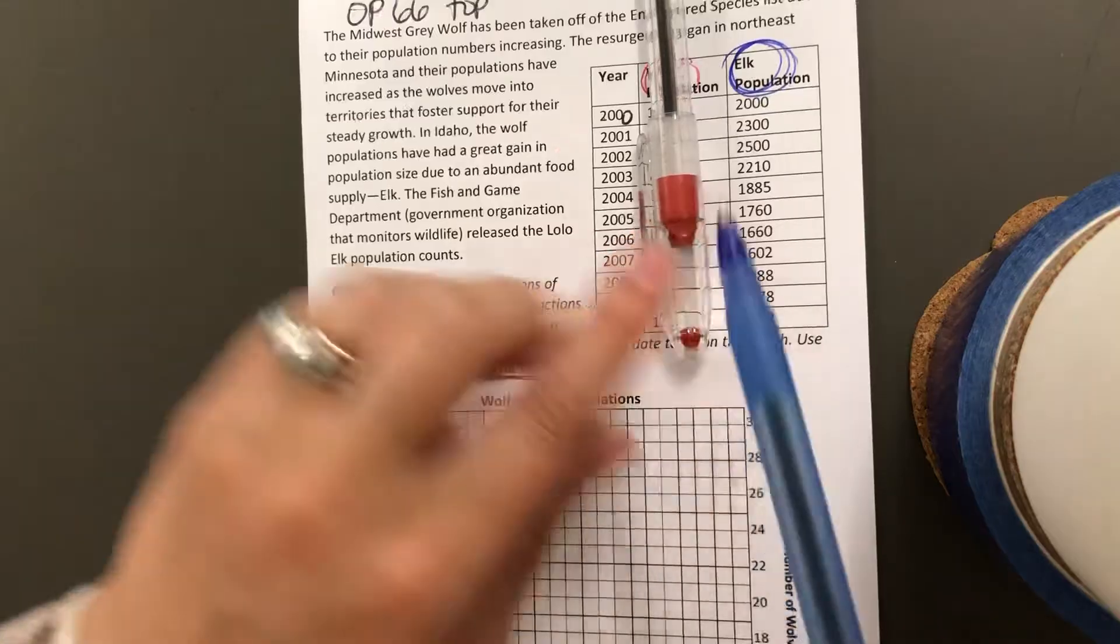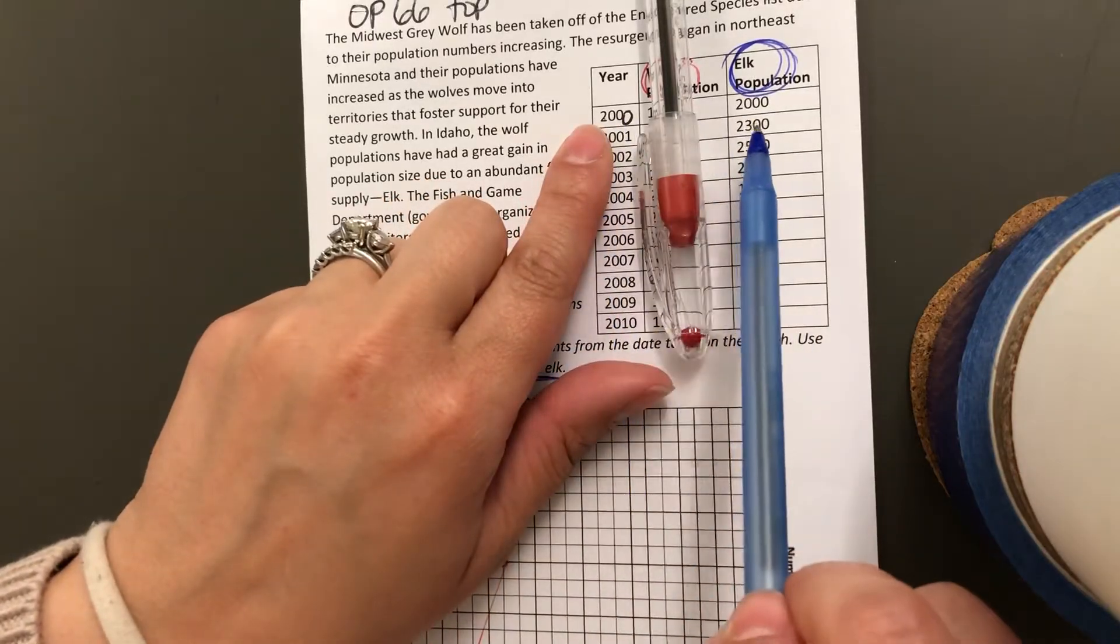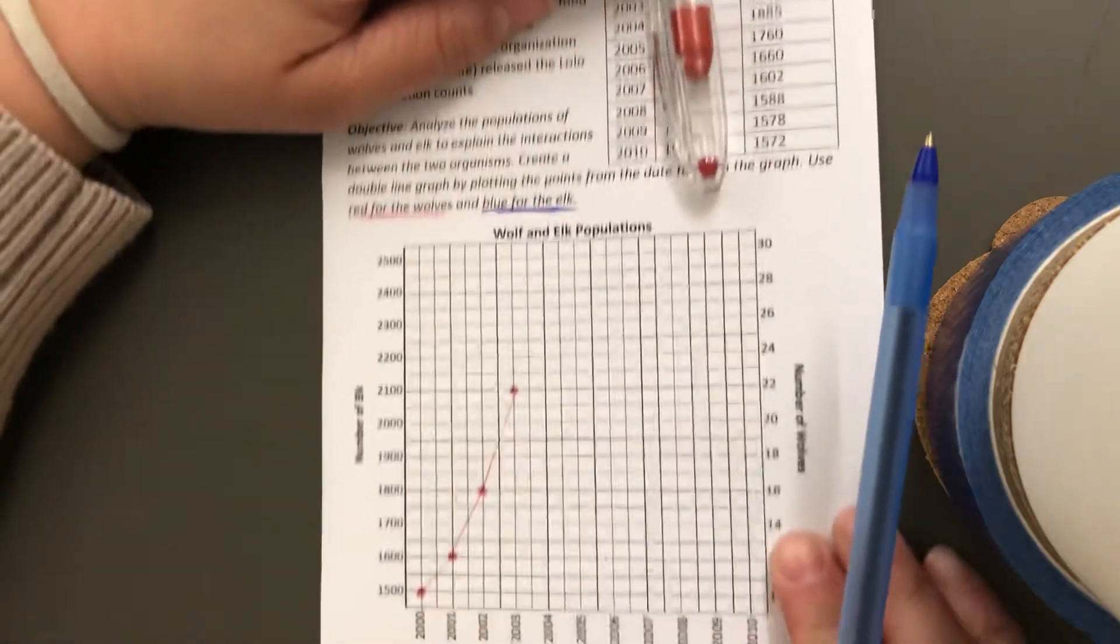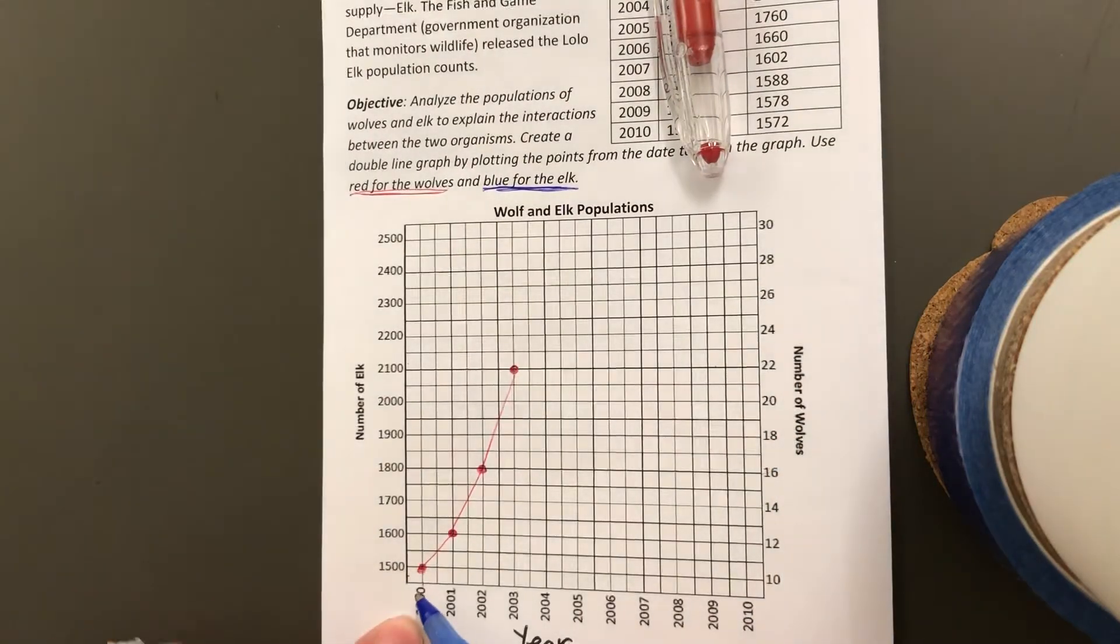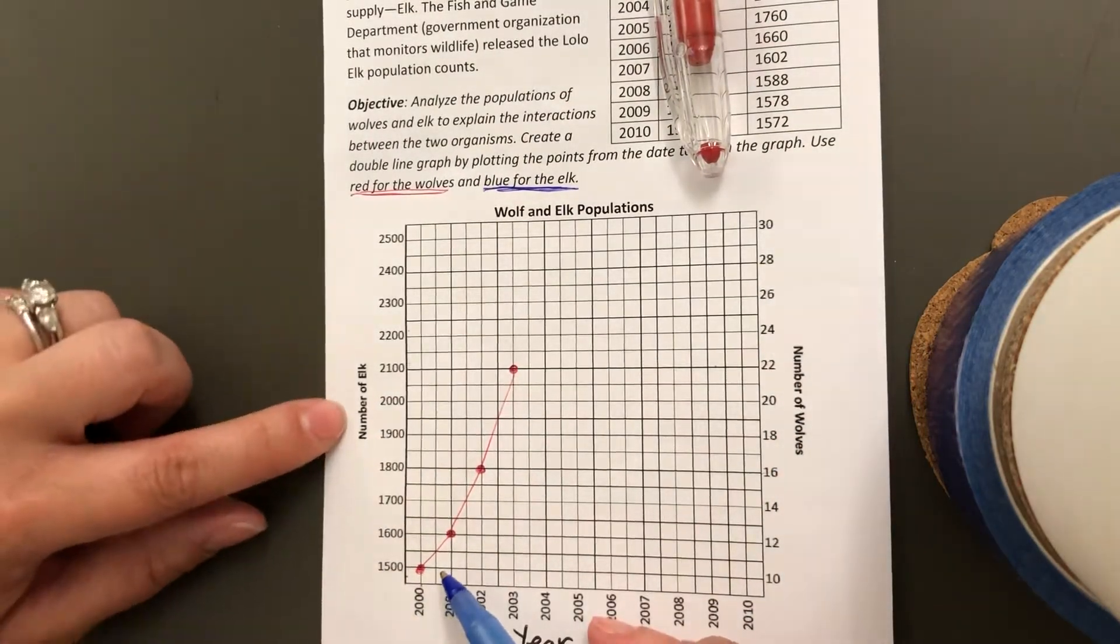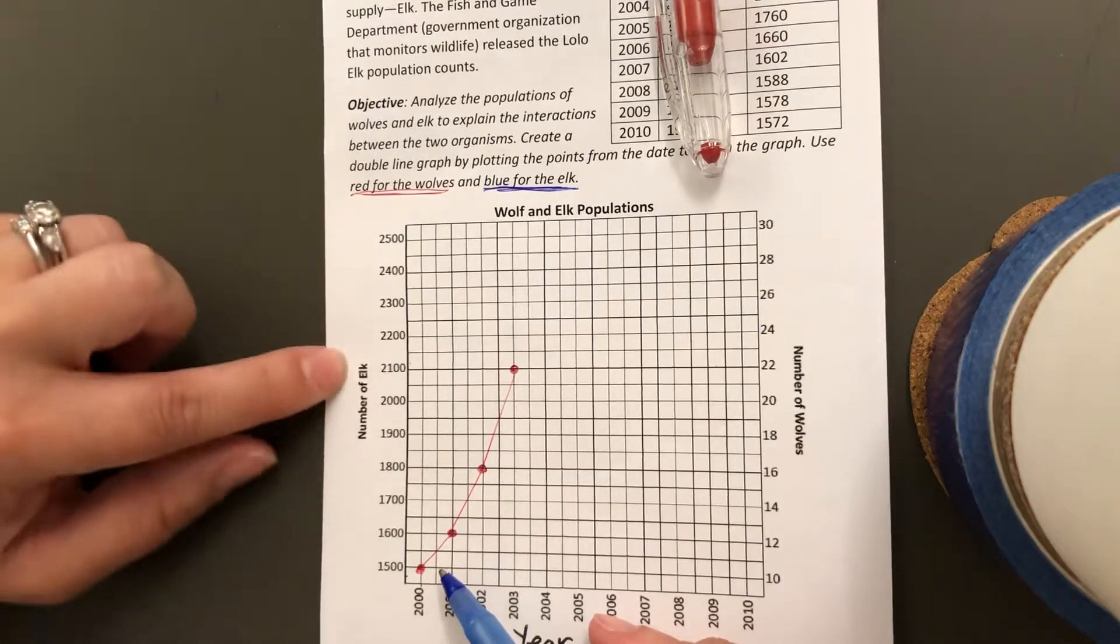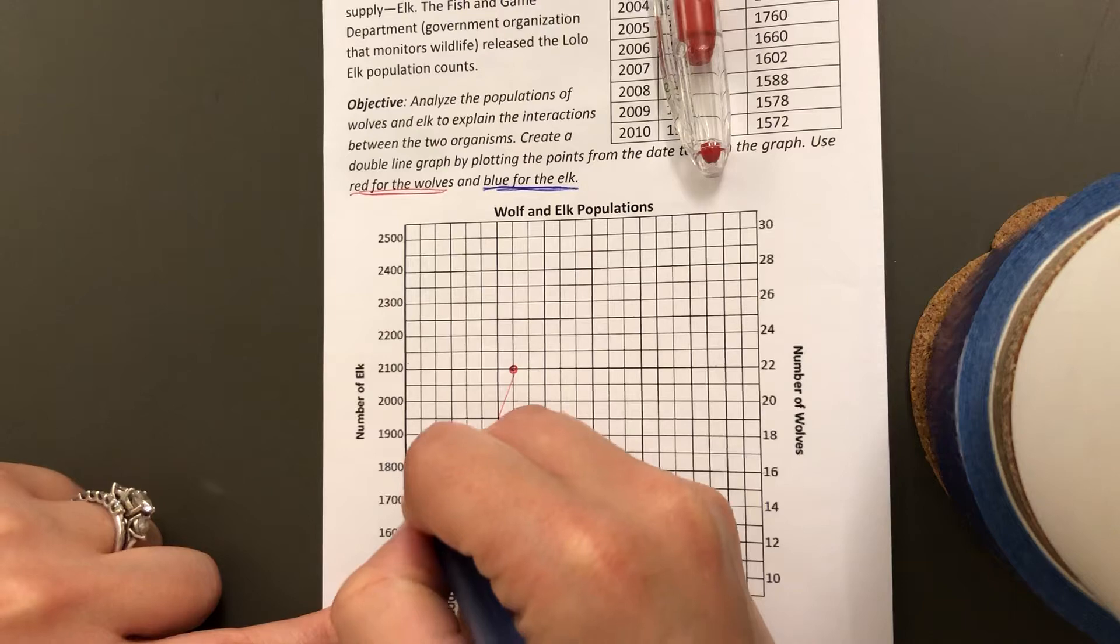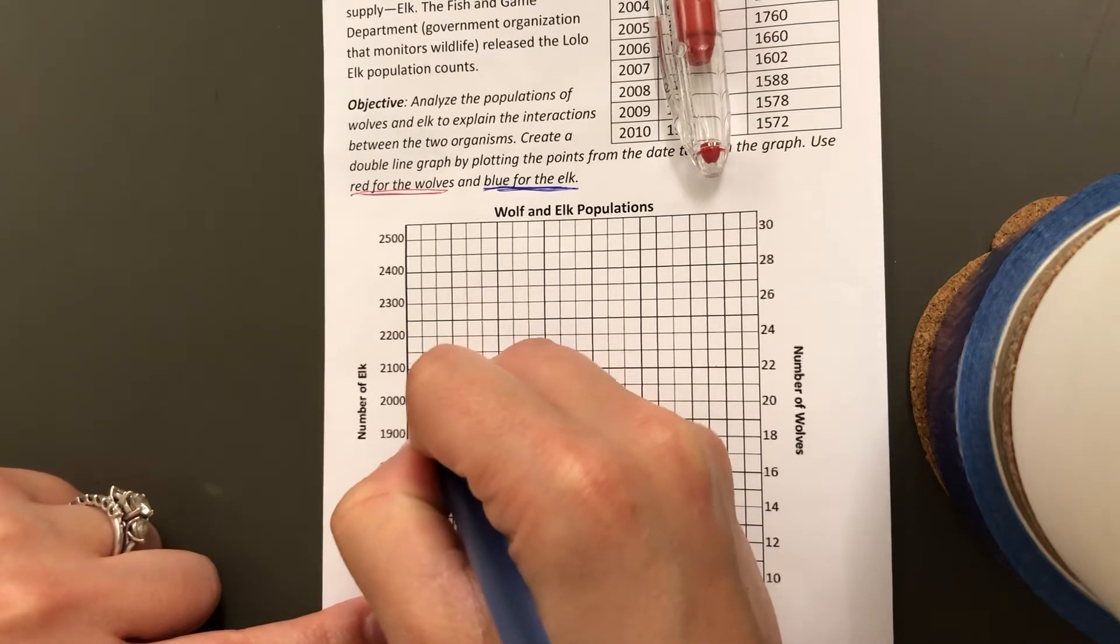I'm going to do the same thing. In year 2000, the population was 2000. So on my graph, I'm going to go to year 2000, but this time I notice that the number of elk is on this side. So in 2000, I'm going to go up to where it was 2000 for elk and draw a dot.